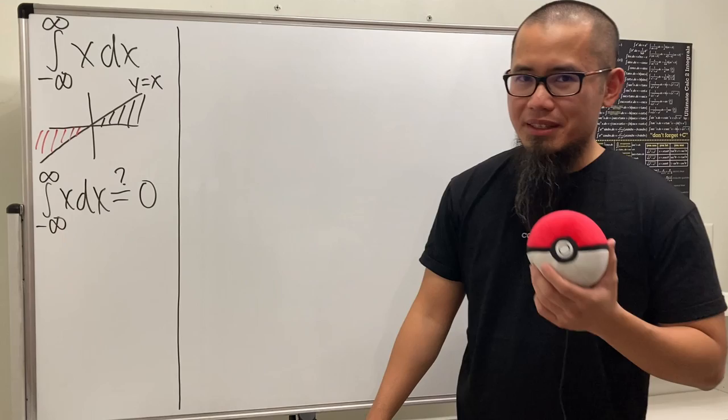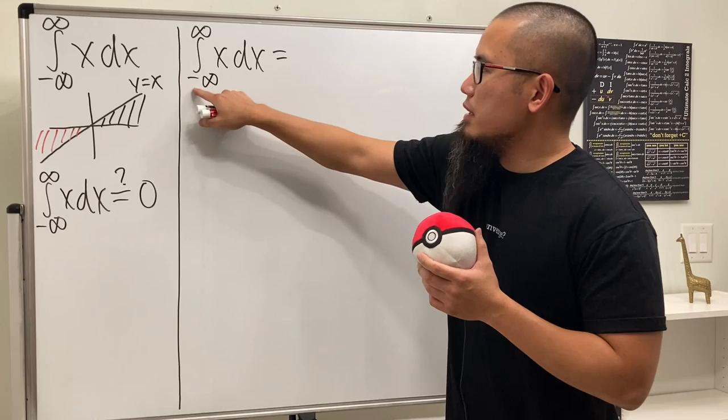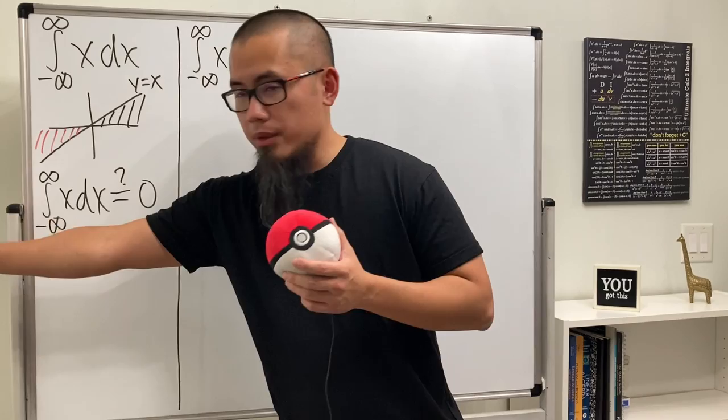Everybody knows all these integrals are equal to zero, but what if we have this integral instead? This right here is actually a divergent integral. The integral going from negative infinity to positive infinity of x dx is problematic because we have an infinity on both sides, and we cannot deal with two infinities at the same time.